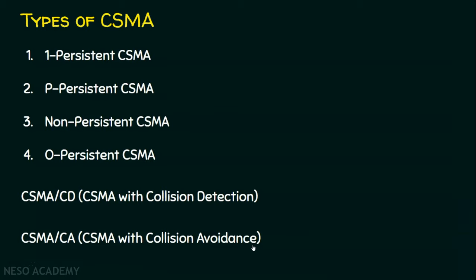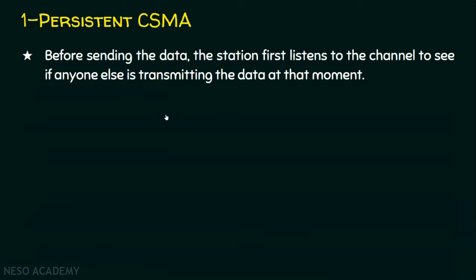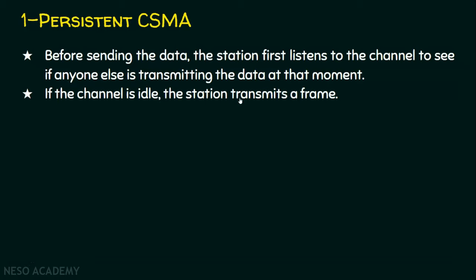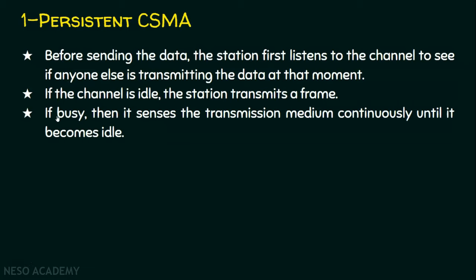In one-persistent CSMA, before sending data, the station first listens to the channel to see if anyone else is transmitting. If the channel is free, it will immediately transmit. Else, it has to wait until the channel becomes free. If the channel is busy, it senses the transmission medium continuously — for example, checking every second — to know whether the channel has become free.